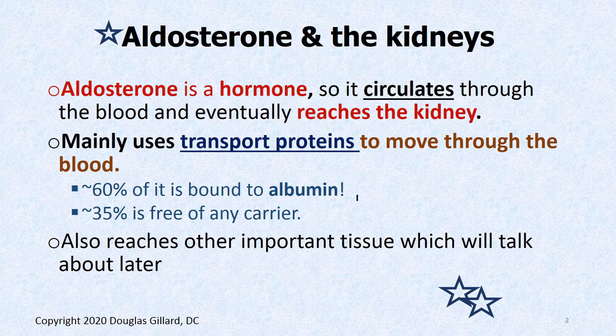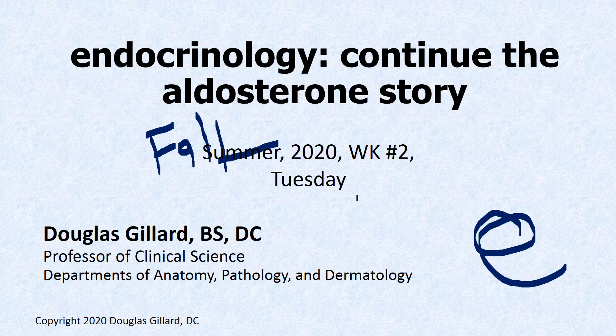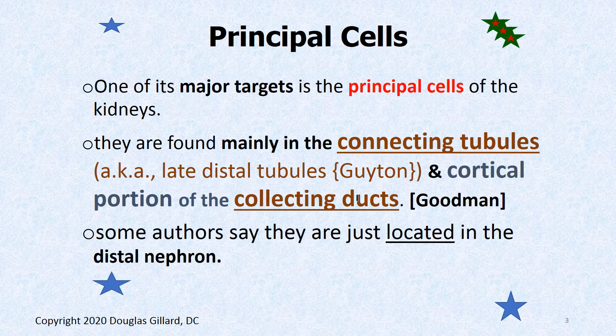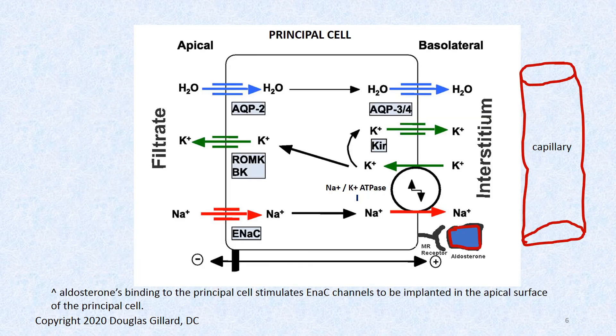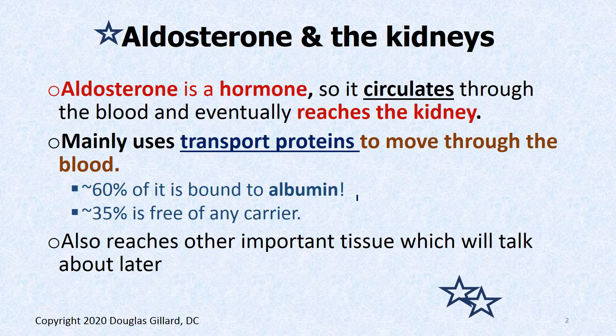We were talking about aldosterone. Aldosterone is a hormone released by the adrenal glands, specifically the zona glomerulosa, more specifically the granulosa cells. It circulates through the blood — one of its targets, beside the heart (we talked about how it can damage the heart along with angiotensin II) — it circulates through the bloodstream and reaches the kidneys.